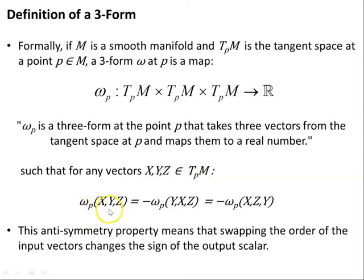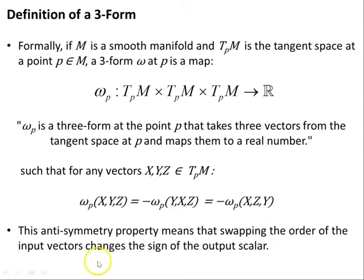For any vectors x, y, z belonging to the tangent space at p, we have the anti-symmetry property: altering the order in which we take the vectors alters the sign of the three-form. This anti-symmetry property means that swapping the order of the input vectors changes the sign of the output scalar.